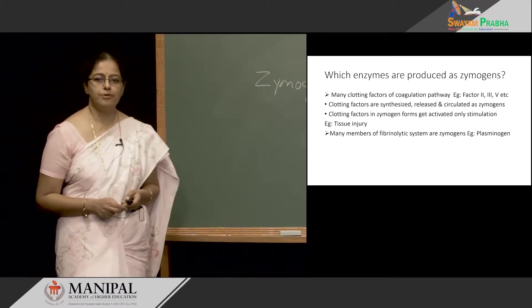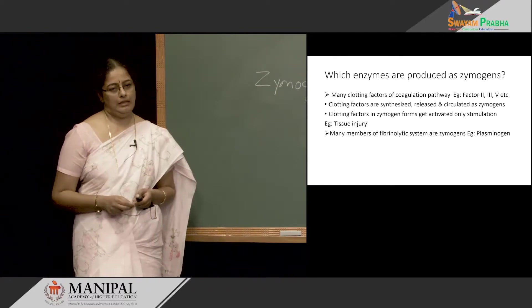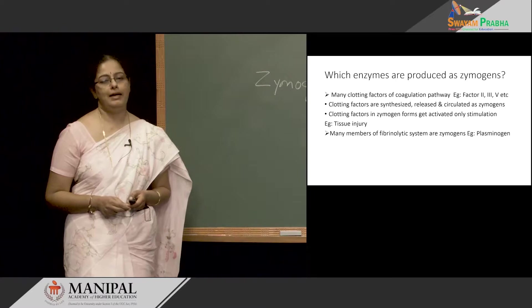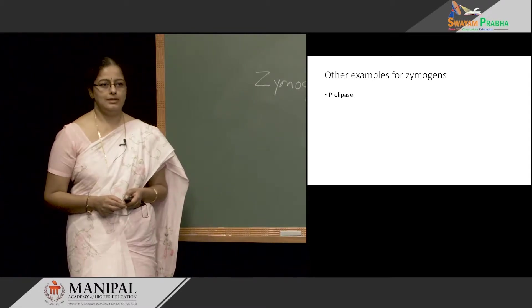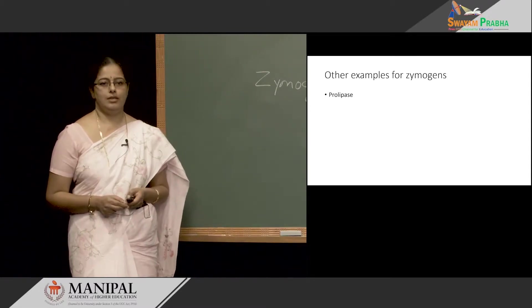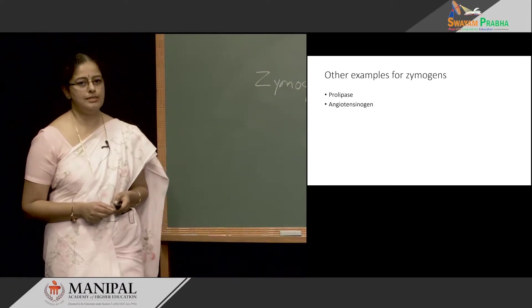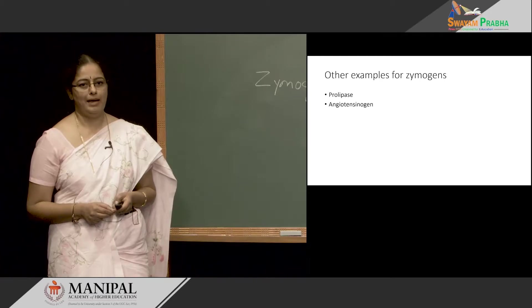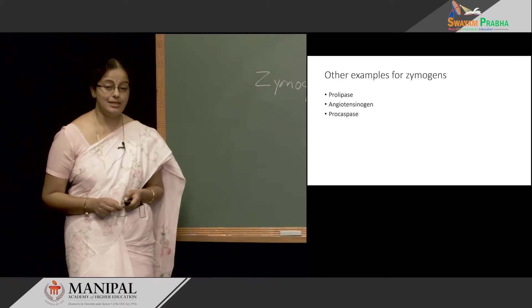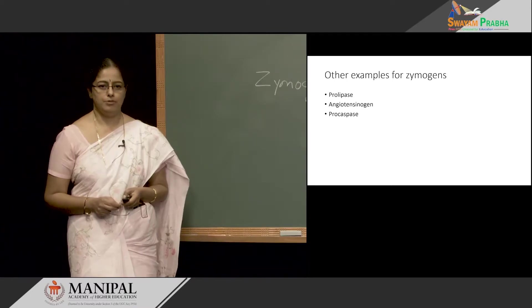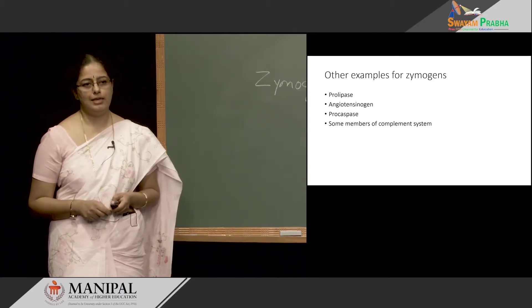We also have members of the fibrinolytic system which act as Zymogens — for example, plasminogen, which has a role in clot lysis, and that is also circulating in the blood as a Zymogen. Further examples include prolipase, a pancreatic enzyme activated only in the duodenum; angiotensinogen, a member of the renin-angiotensin system involved in controlling blood pressure and fluid balance; procaspase, an enzyme of apoptosis; and members of the complement system involved in providing immunity to the body.